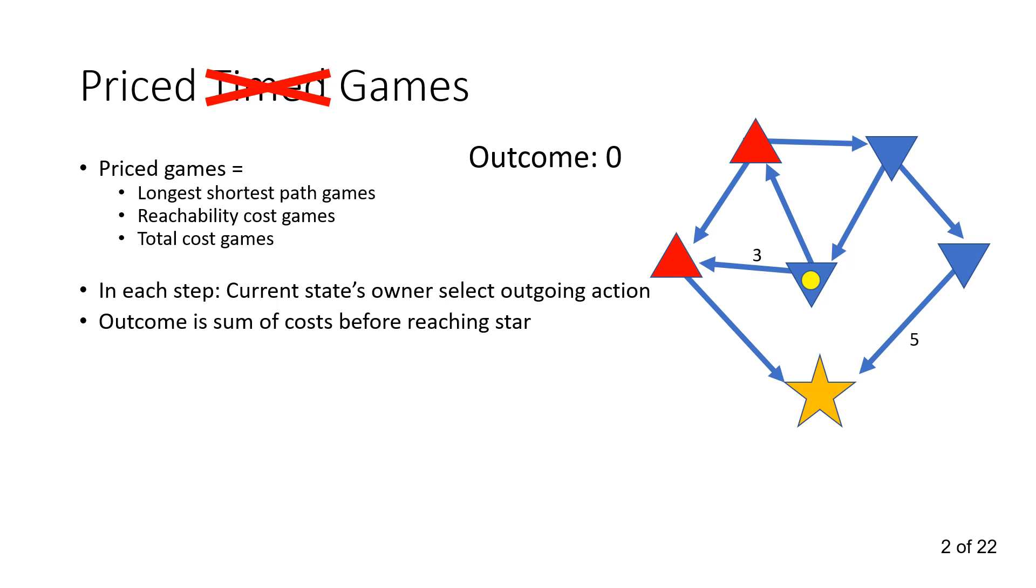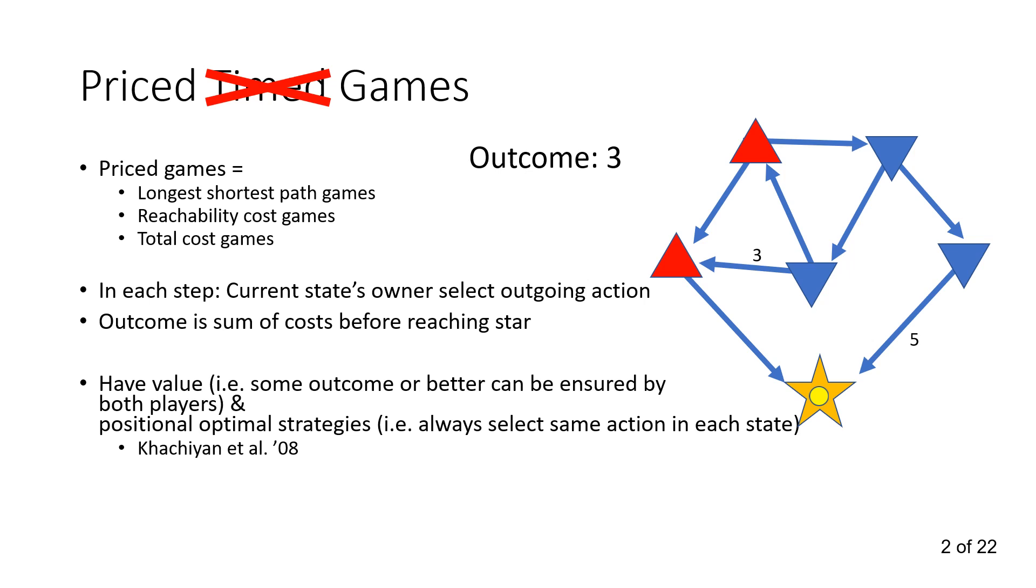Minimizer can move up, in that case he will cycle, or he can move left and get to goal for 3. So he does that, he goes through, cost 3, and now the maximizer's turn. He has no option, he just goes to goal. We see that the outcome here was 3.